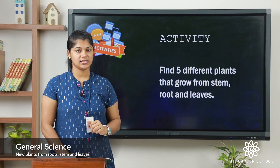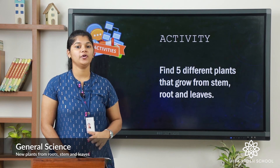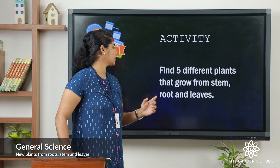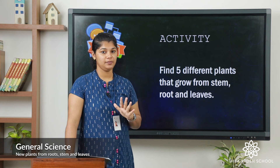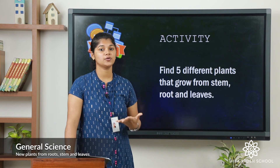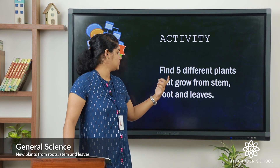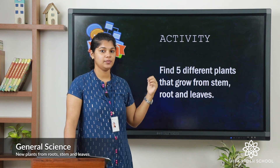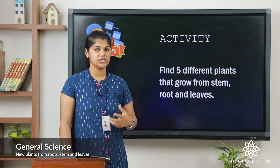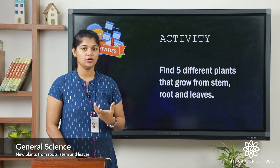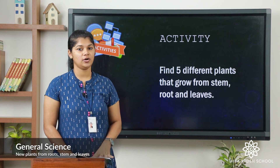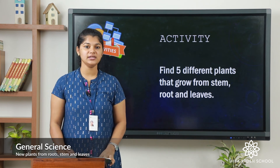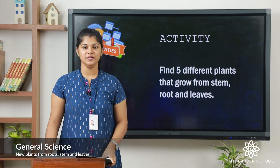That's all about today's class. Hope you all understood it. Let's do an activity: find five different plants that grow from the root, stem, and leaves. The examples I have already given do not need to be used — find your own examples and write them down in your science notebook. See you all in the next class. Take care. Bye.